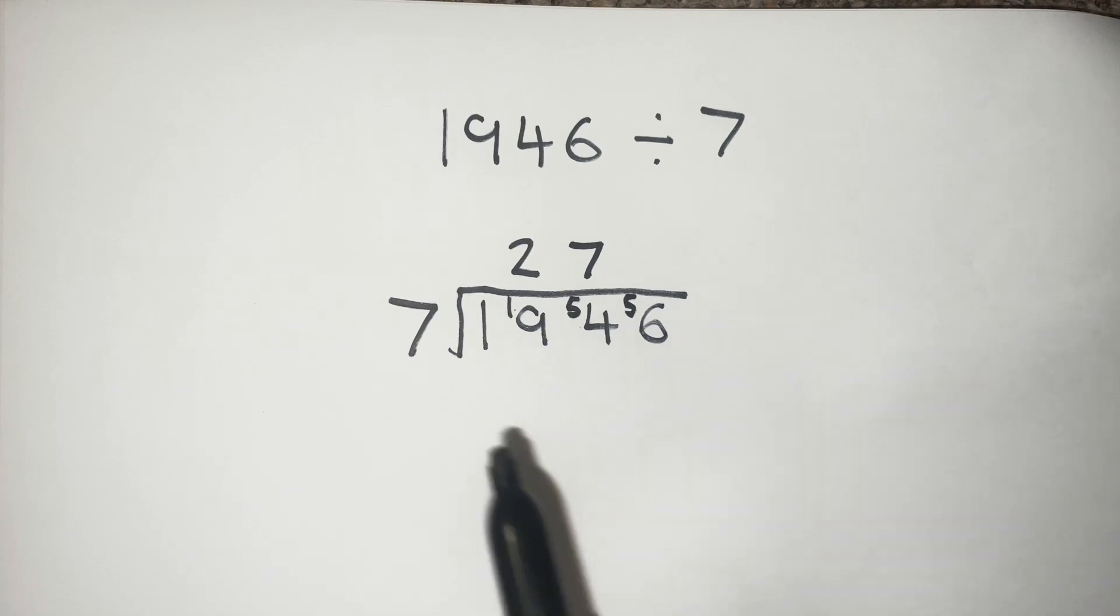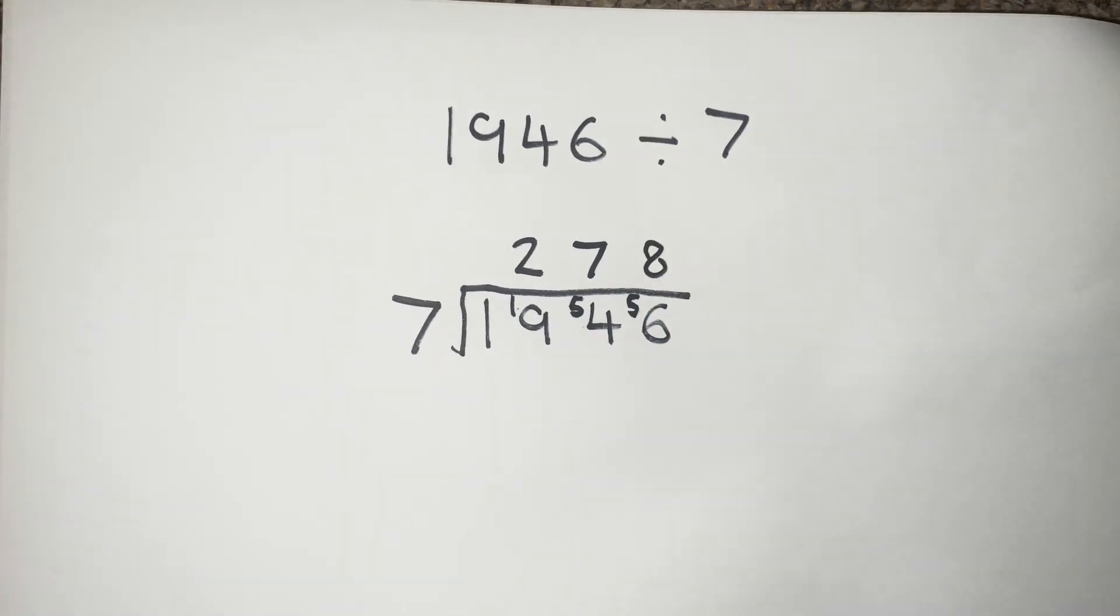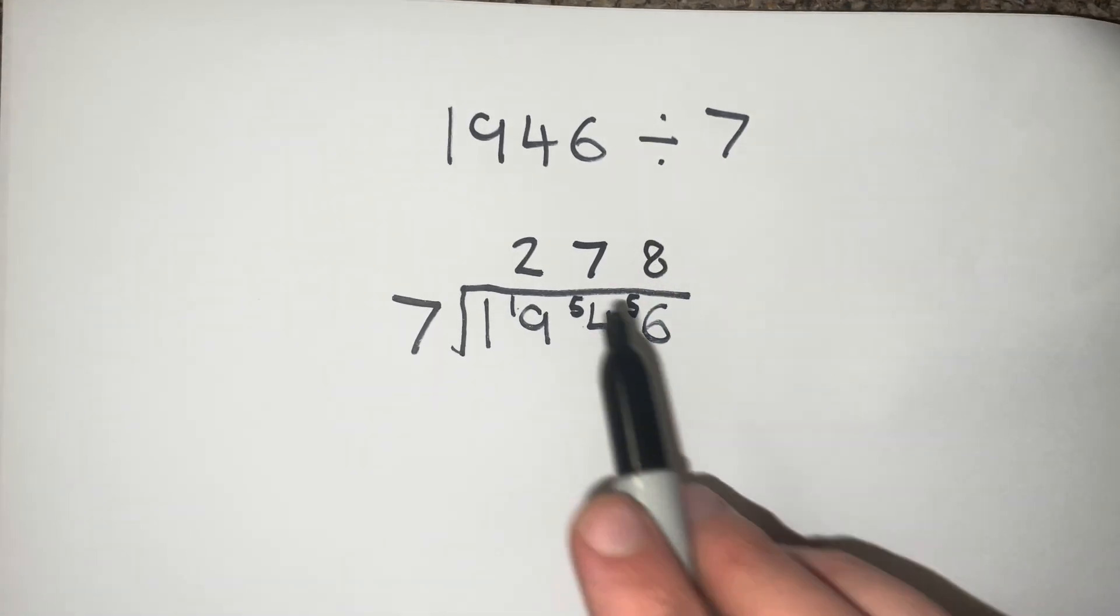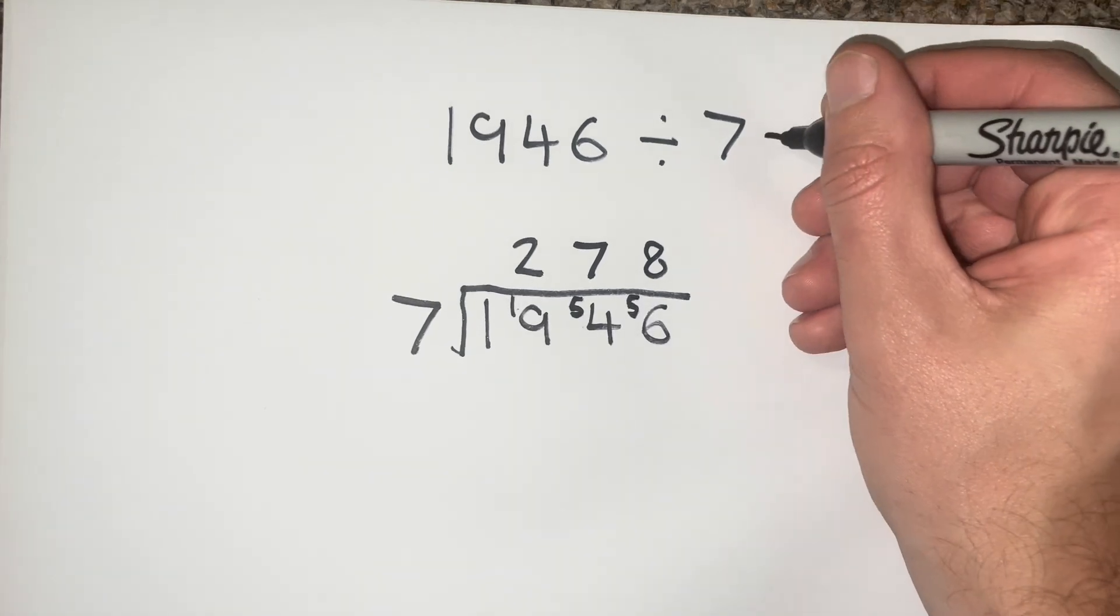The last part is then to work out how many 7s go into 56. That is going to be 8. There's nothing left over, so we've got our final answer here of 278.